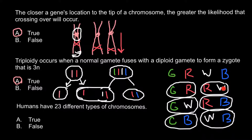You may also ask why I didn't list all possible variants — for example, green and blue versus blue and green. But in the cell there is no such thing as left, right, top, or bottom. If two chromosomes are present in the nucleus — green and blue — this is the same as blue and green. So I only listed unique combinations, and there are six unique combinations when we have four homologous chromosomes.